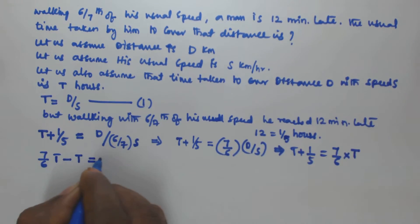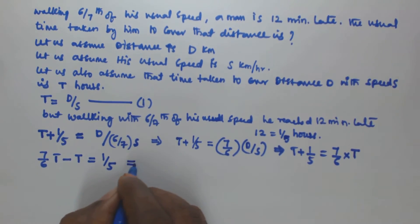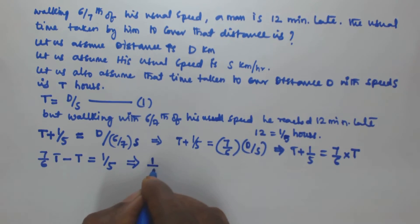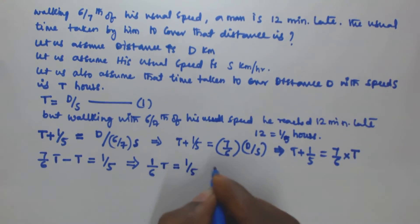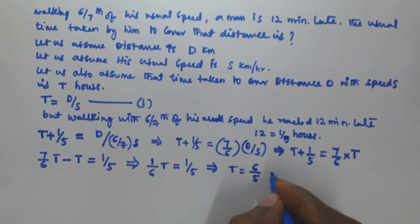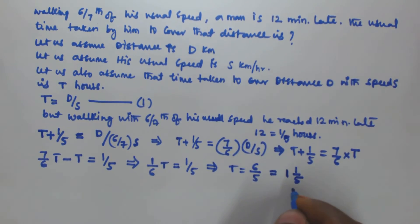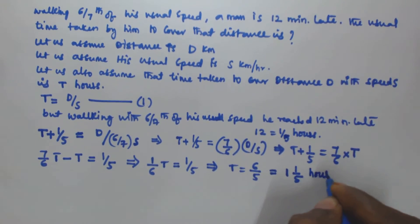From t + 1/5 = (7/6)t, rearranging: (7/6)t − t = 1/5, which gives (1/6)t = 1/5, so t = 6/5 hours.